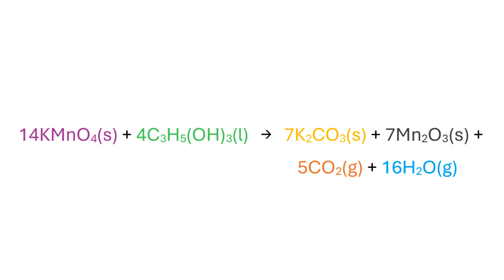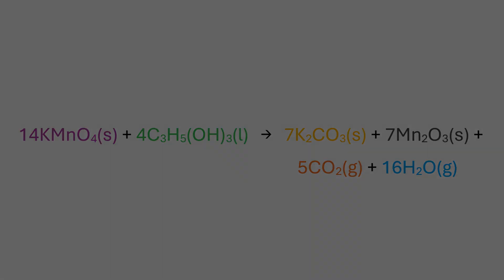The permanganate itself is reduced in the process from an initial oxidation state of plus 7 of manganese to a final oxidation state of plus 3 to form manganese trioxide. The reaction is highly exothermic and spontaneously ignites with a purplish flame.